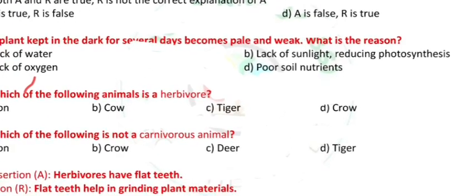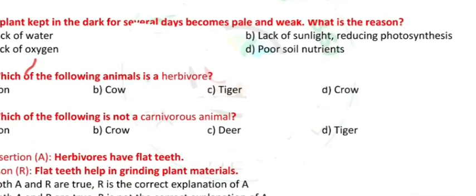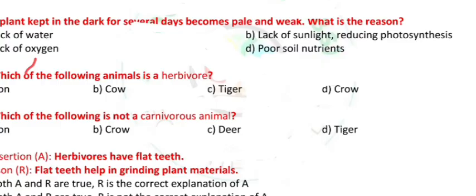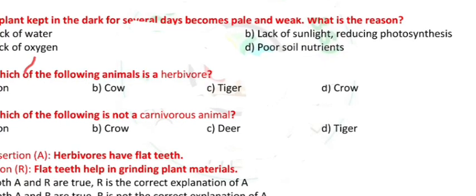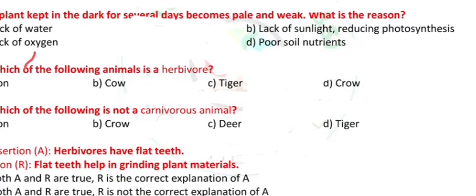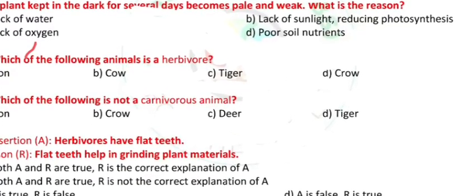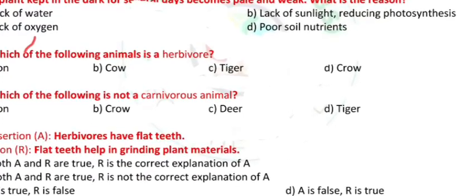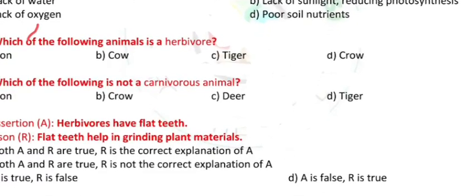Question 4: A plant kept in the dark for several days becomes pale and weak. What is the reason? a) Lack of water, b) Lack of sunlight reducing photosynthesis, c) Lack of oxygen, d) Poor soil nutrients.